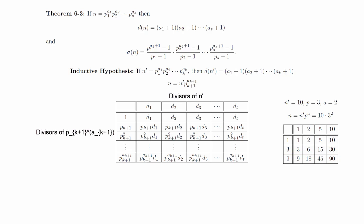We can also go in the other direction and pick an arbitrary value in the chart, and see that it comes from the product of two terms, one of which divides n prime, and the other of which is a power of p. Now that we know this, we can see that there are d of n prime times a sub k plus 1 plus 1 divisors of n. And we can now use the inductive hypothesis to get the desired result.